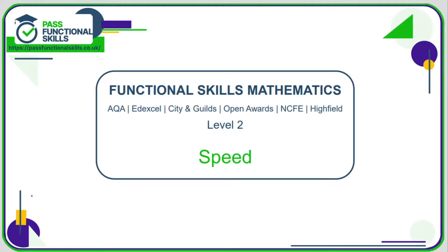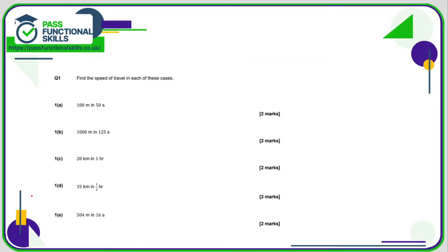Let's take a look at the speed questions. You can use a calculator for all of them, which is good news. The most important thing is remembering that speed is the distance divided by time. So 100 divided by 50 is 2. And because the distance is metres and the time is seconds, the unit for speed is metres per second.